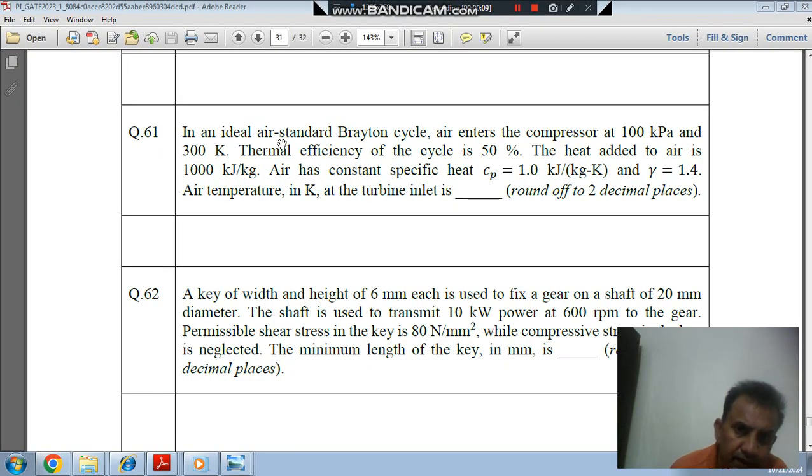Question number 61: In an ideal air-standard Brayton cycle, air enters the compressor at 100 kPa and 300 K. Thermal efficiency of the cycle is 50%, the heat added to air is 1000 kJ/kg. Air has constant specific heat Cp = 1.0 kJ/(kg·K) and γ = 1.4. Air temperature in Kelvin at the turbine inlet is (round to 2 decimal places).